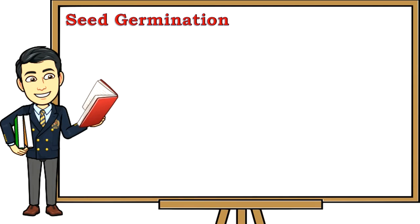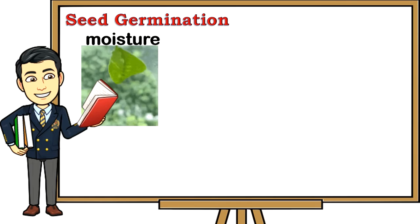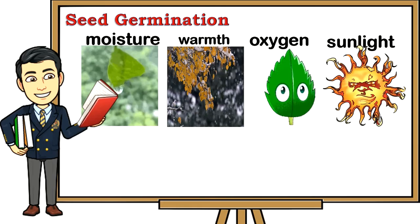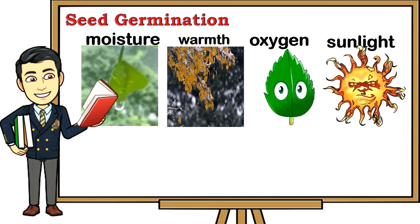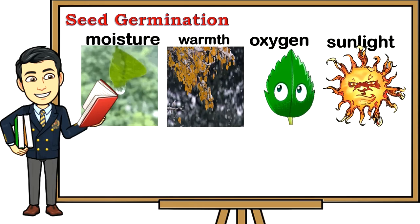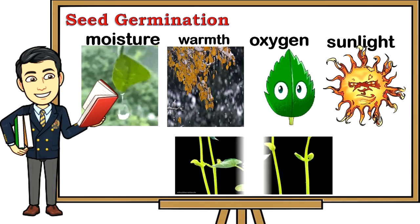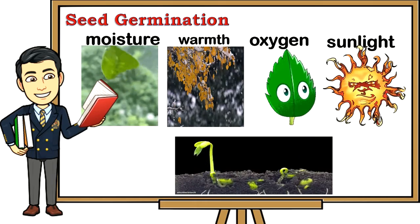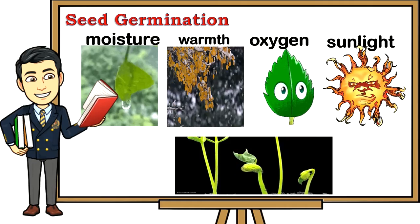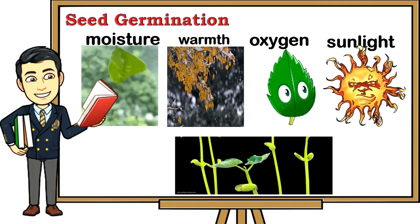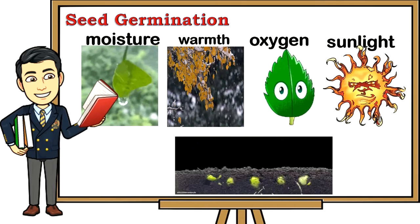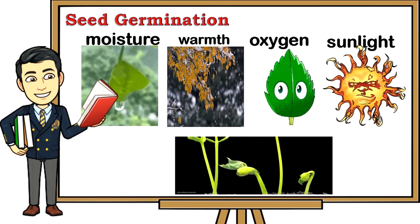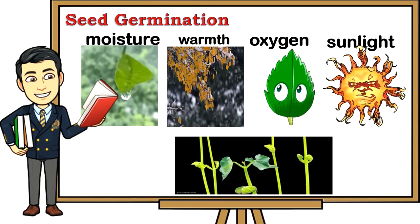Seed germination: seeds need moisture, warmth, oxygen, and in some instances sunlight in order to germinate. Small seeds are sown in a seed box before setting them out in the field. Seeds can be germinated in small plastic trays, pots, and other small containers filled with soil medium. The bottom of the seed boxes should have tiny holes for drainage. Moisten the soil with a fine spray of water, then make rows with pointed sticks — rows should be twice as deep as the size of the seeds. Sow the seeds evenly and cover them with loose soil, then press gently.